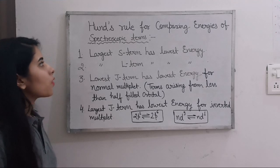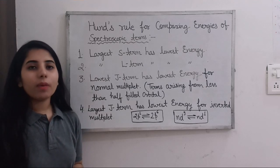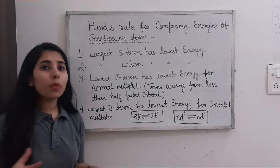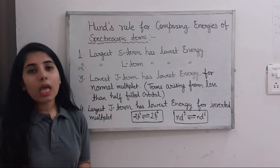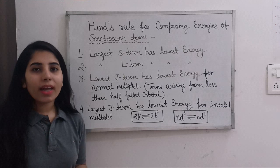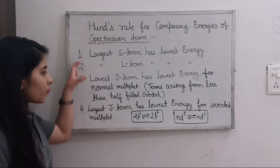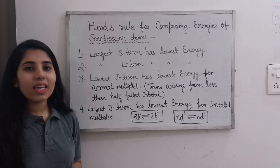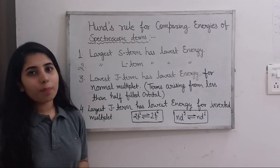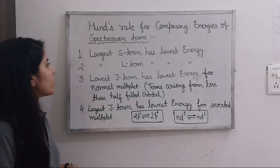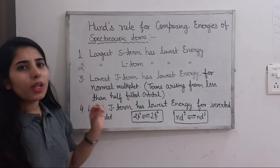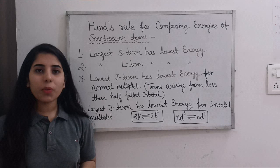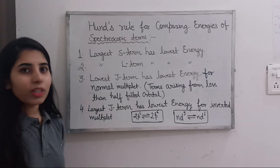We are going to talk about Hund's rule for comparing energies of spectroscopic terms. How can we compare the energies of any two or more spectroscopic terms? We will require these points, so let's talk about them first, and then we will discuss some examples based on them as well.